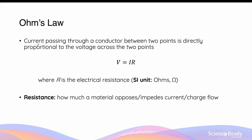Ohm's law is an important component of analyzing electric circuits. It states that the magnitude of current passing through a conductor between two points is directly proportional to the voltage across those two points. Recall that voltage is what gives rise to current — without voltage in an electric circuit, you will not have any current.